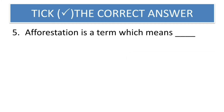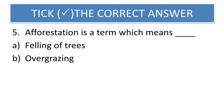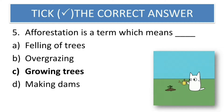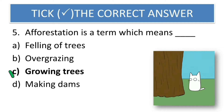Next question: Afforestation is a term which means — felling of trees, overgrazing, growing trees, or making dams. This is quite obvious. Afforestation means growing more trees. So the correct answer is growing trees.